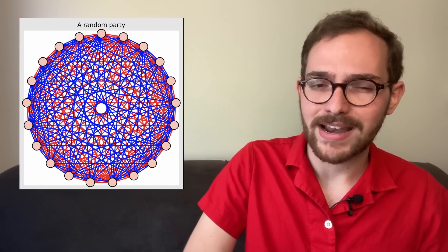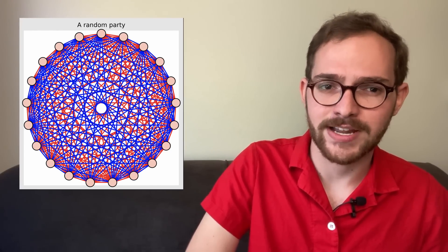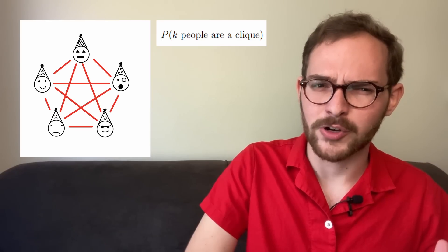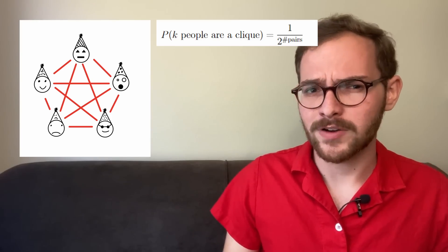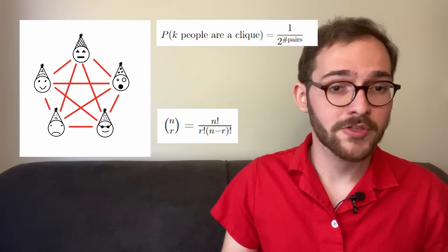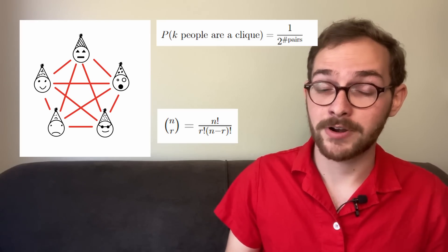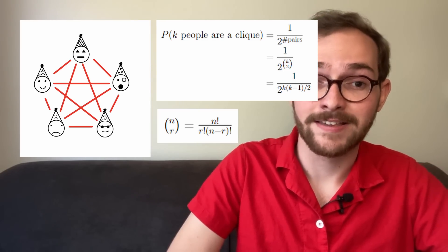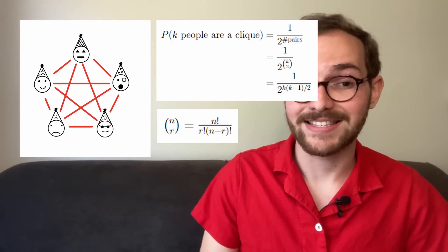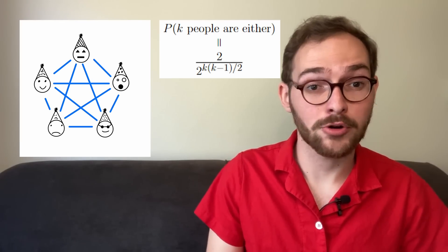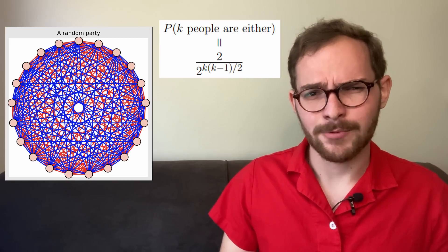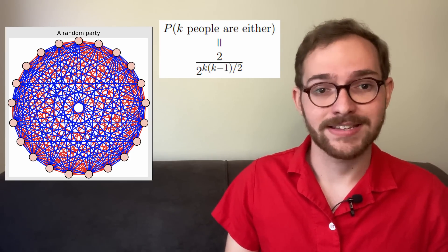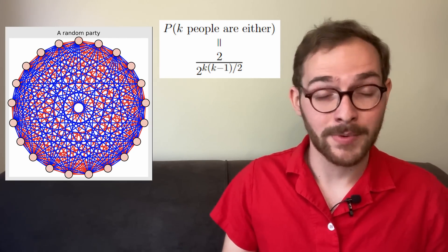But even though computing the exact value of r of k is hard, we can use the probabilistic method to find a lower bound. Let's assume that every pair of people has a 50-50 independent chance of knowing each other. We're going to find the probability that a group of k people is a clique — that's just 1 over 2 to the number of pairs. If you want to pick r things out of n things, there are n-choose-r ways. In particular, there are k-choose-2 pairs of people, giving us the probability that k people form a clique. It's the same probability to be an anti-clique, giving us the total probability that a group is either. So what are the odds that with n people, we get any k-person cliques or anti-cliques? This is still hard to compute exactly, but we can estimate it.